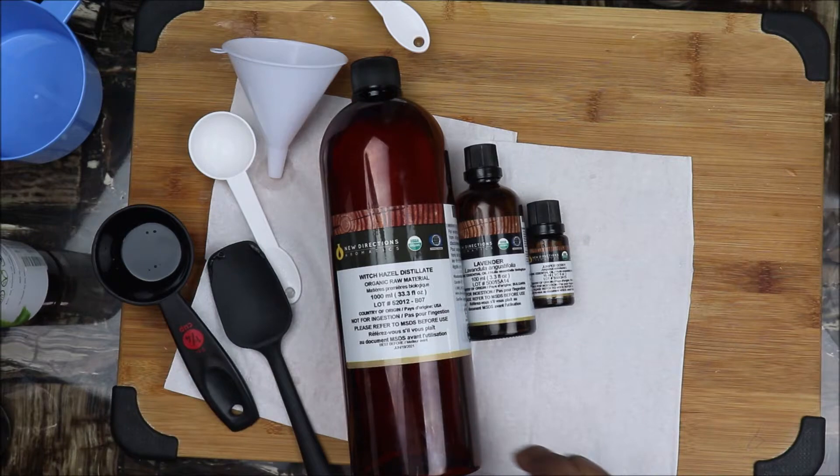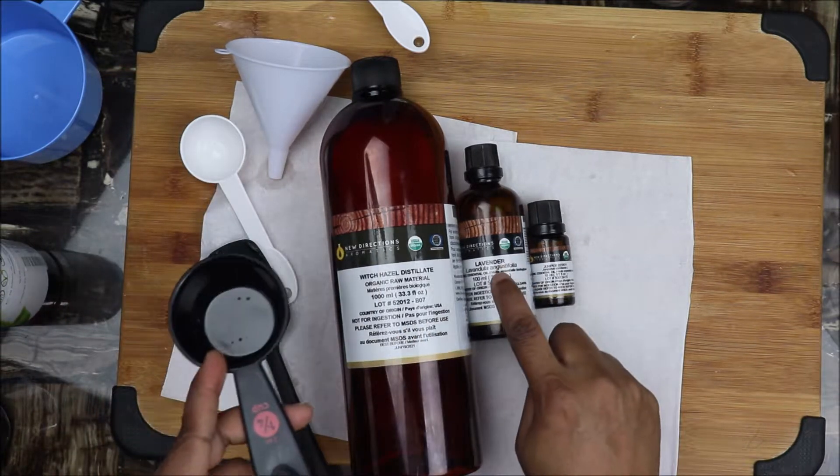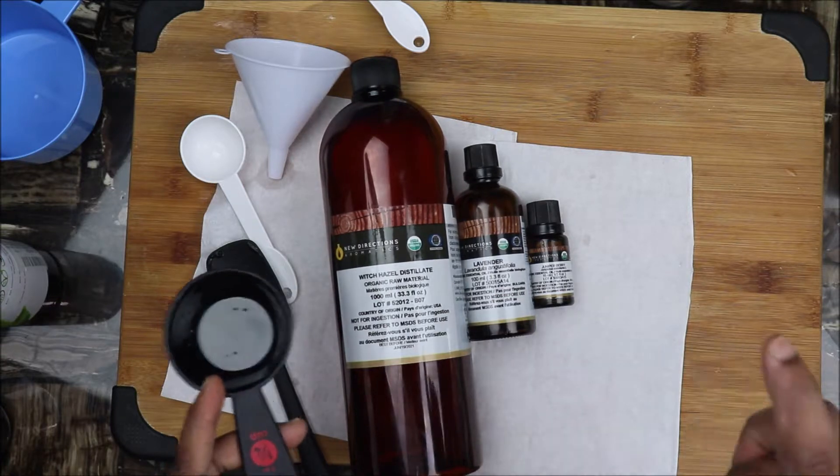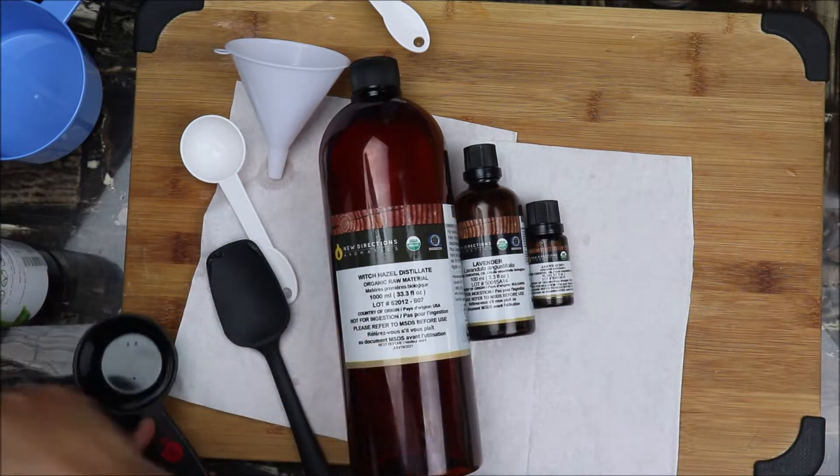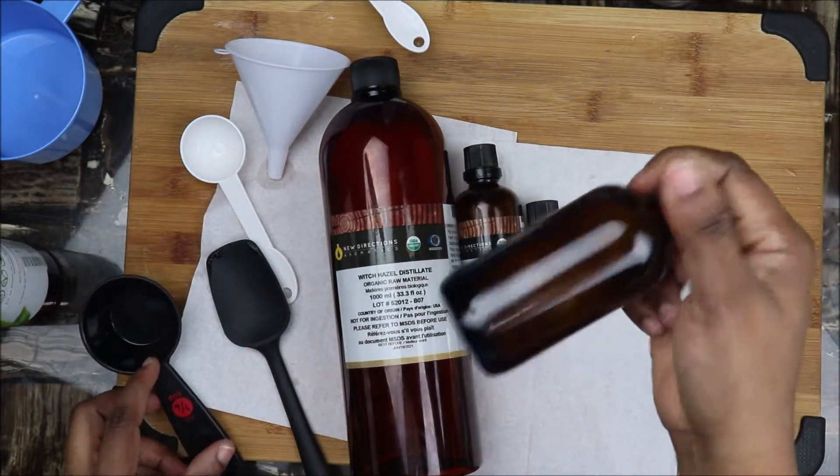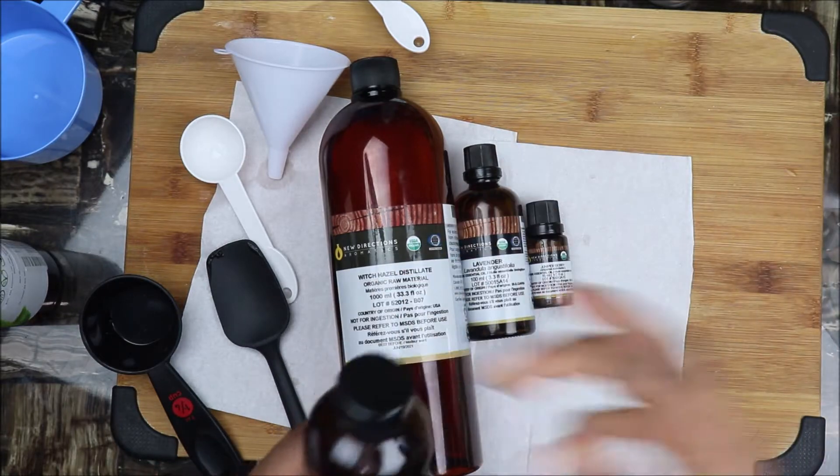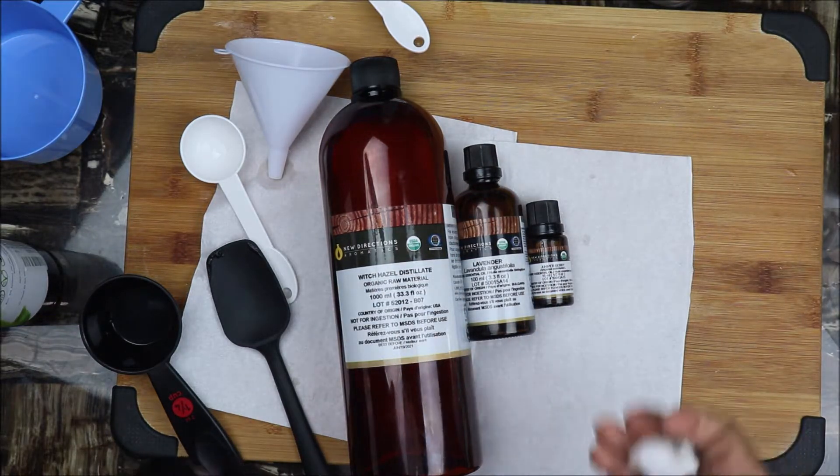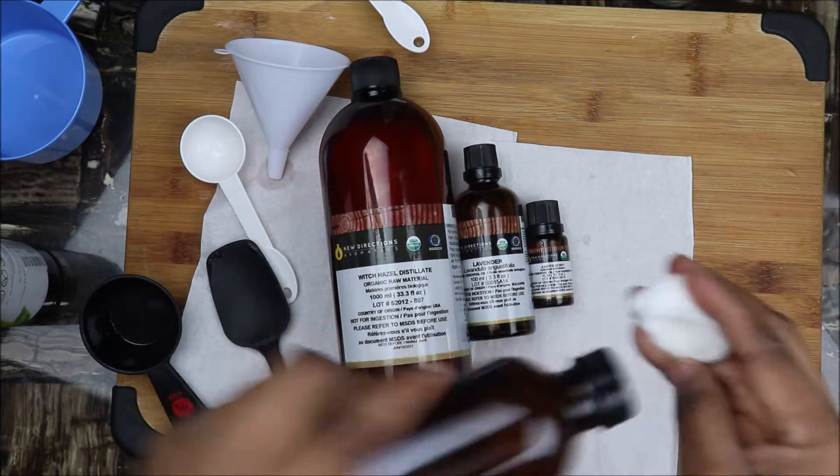You take one quarter cup of witch hazel distillate with two drops of lavender essential oil and two drops of juniper berry essential oil. You mix them together in a dark colored bottle, then you cap it and shake it well.